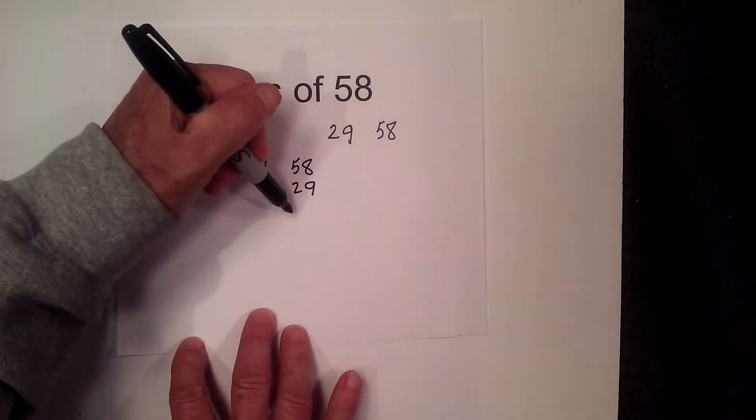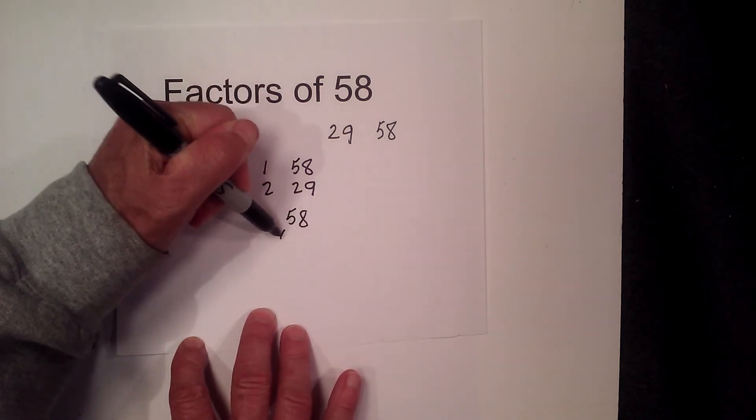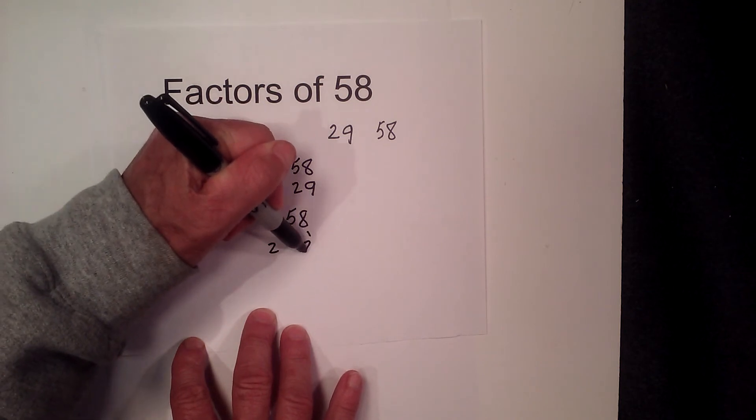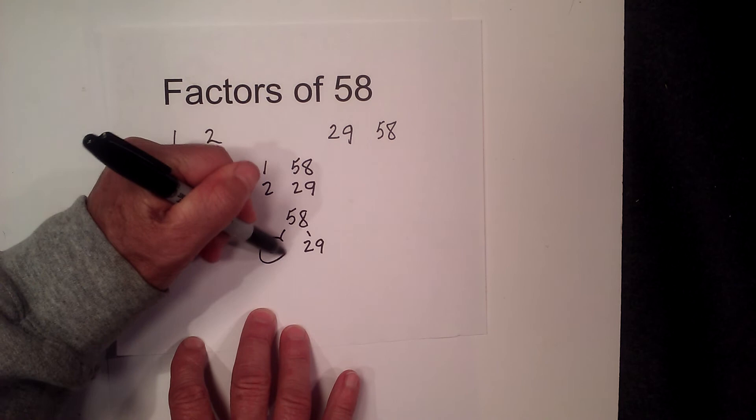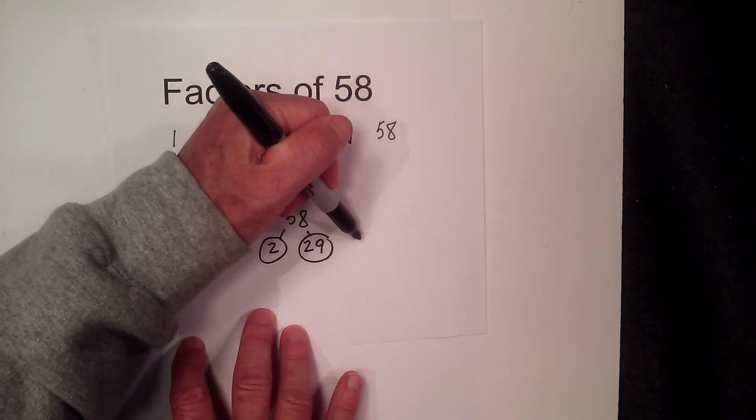And then if you want to know the prime numbers, you can complete a factor tree. 2 goes into 58, 2 times 29. Circle both of these because they are prime, and so the prime numbers of 58 are 2 and 29.